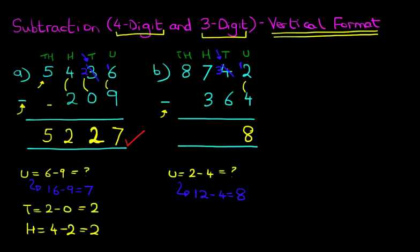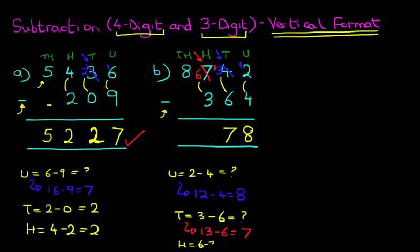Now let's move to the tens column. For the tens column, we have three minus six. Now three is smaller than six, so we cannot do this. We're going to have to take one from the hundreds column. So let's cross out the seven. Seven minus one is six, and the one we have taken from here we're going to move across to the tens. So the tens has now become 13 minus six. Thirteen minus six is seven. Now the hundreds is six minus three. Six is larger than three, so we don't need to move one from the thousands. Six minus three is three.